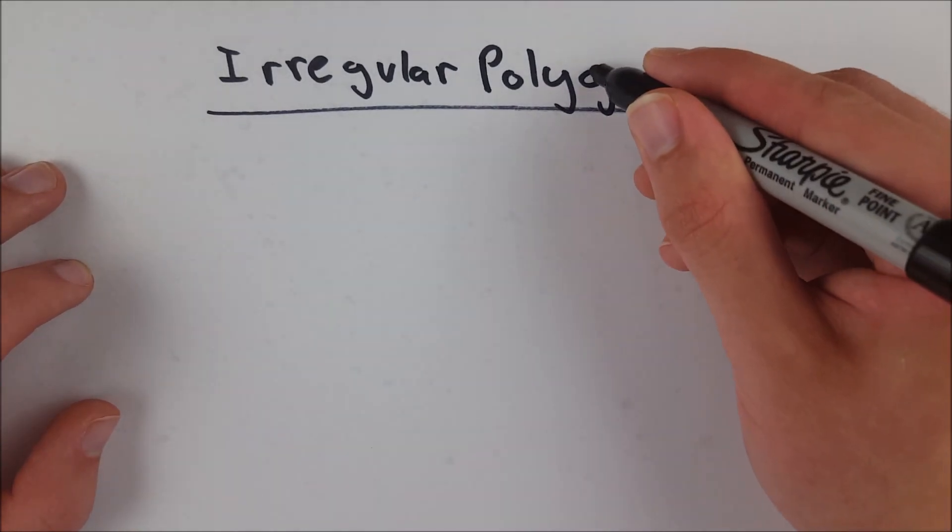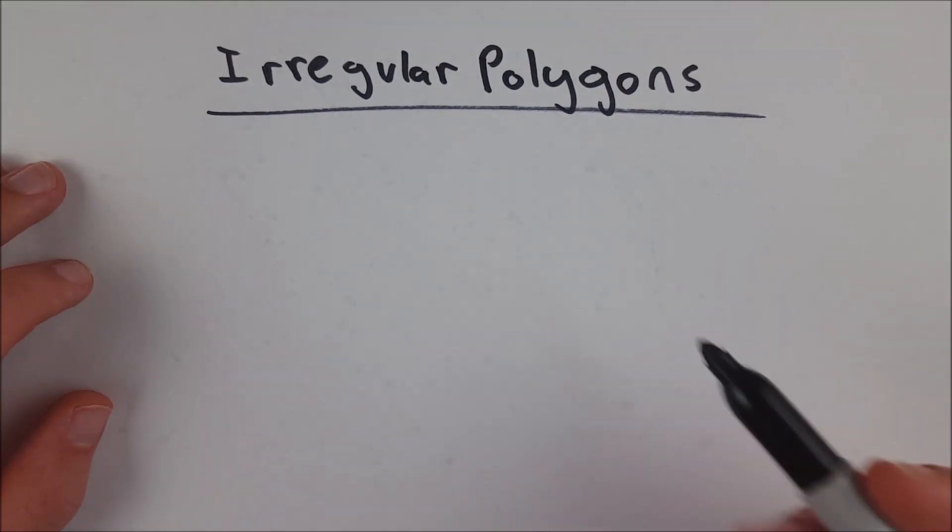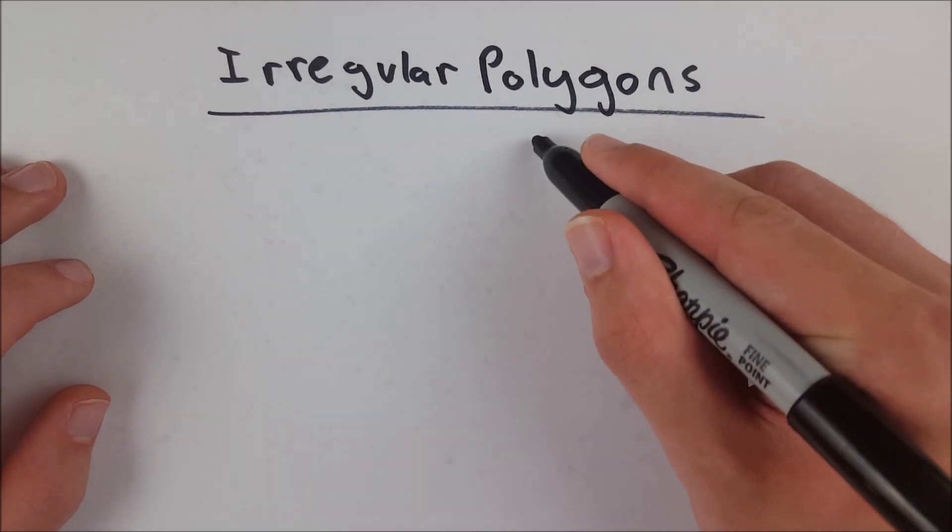It'll be nice and short because irregular polygons are not that interesting. Irregular polygons are simply polygons that aren't regular. A regular polygon is a polygon that is equilateral and equiangular.